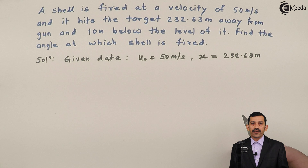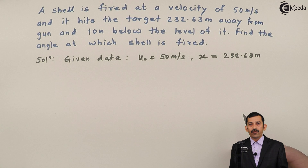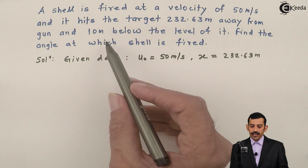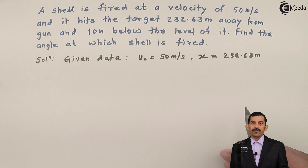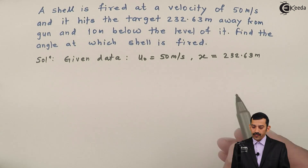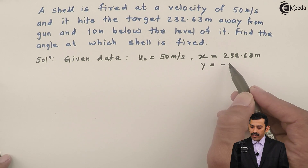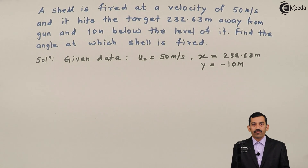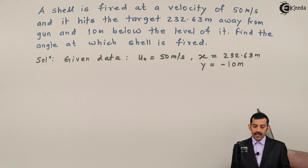The projectile hits the target 10 meters below the level of the gun, meaning the final position is below the point of projection. Therefore, the vertical distance Y must be written with a minus sign. Whenever the final position is below the initial position, Y is negative. So Y equals minus 10 meters — this minus sign is very important.